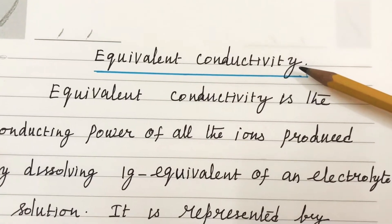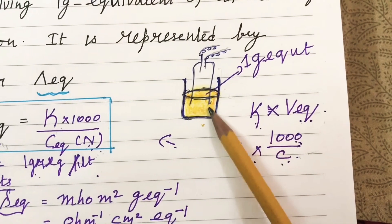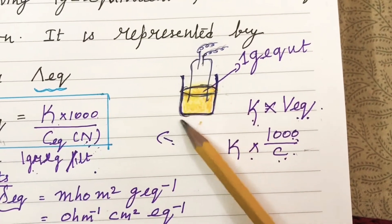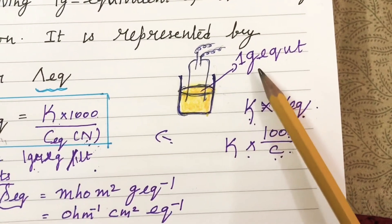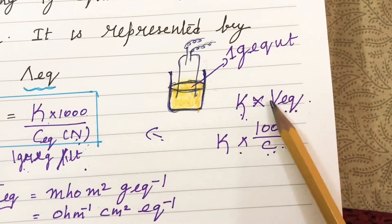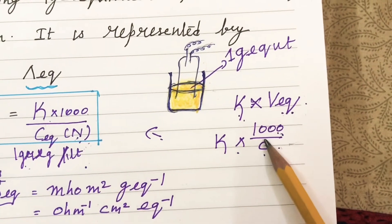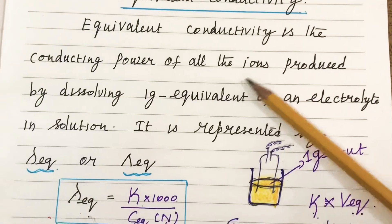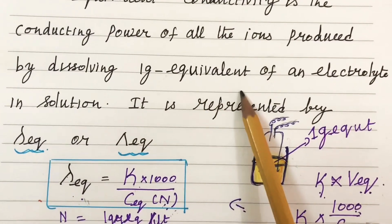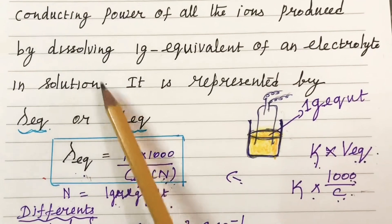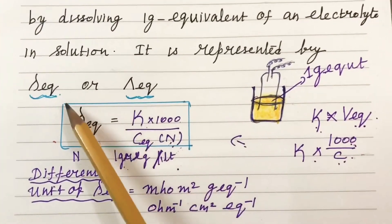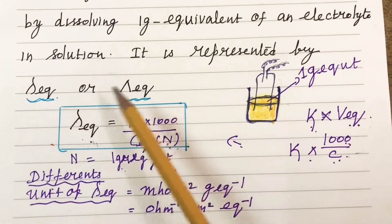Equivalent conductivity: consider an electrolytic cell containing 1 gram equivalent weight of the substance in a solution. The conductivity of that solution is called equivalent conductivity, as it contains 1 gram equivalent weight of the substance. In definition, equivalent conductivity is the conducting power of all the ions produced by dissolving 1 gram equivalent weight of an electrolyte in solution. It is represented by lambda equivalent.